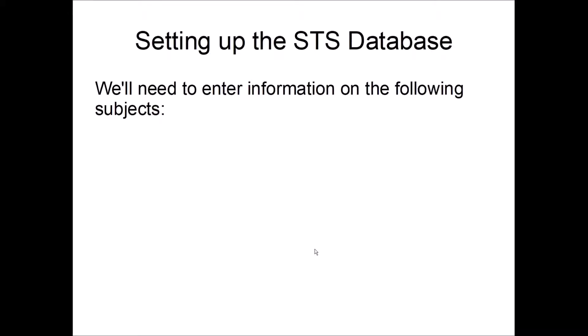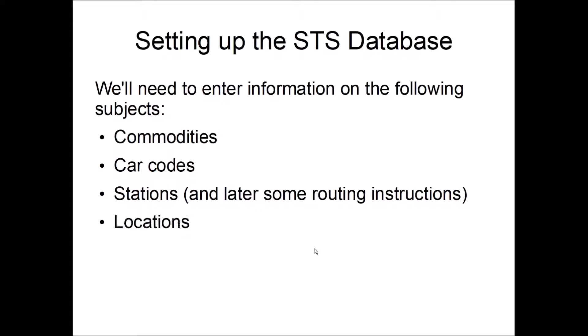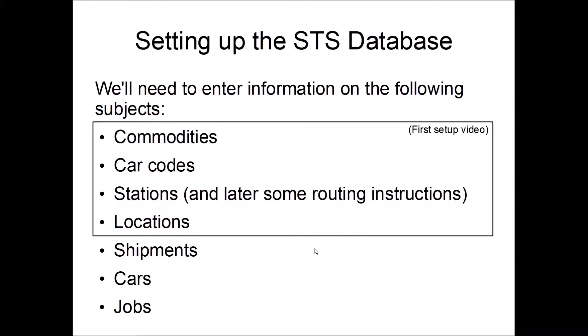We'll be setting up those portions of the database. Before we do that, we just want to have a little review of what we've done so far. We've set up the commodities, car codes, stations, and locations. Stations and locations will definitely need to be done before we set up jobs. And we did shipments and cars. The first four were done in the first video, shipments and cars in the previous one. And now we're going to do jobs.